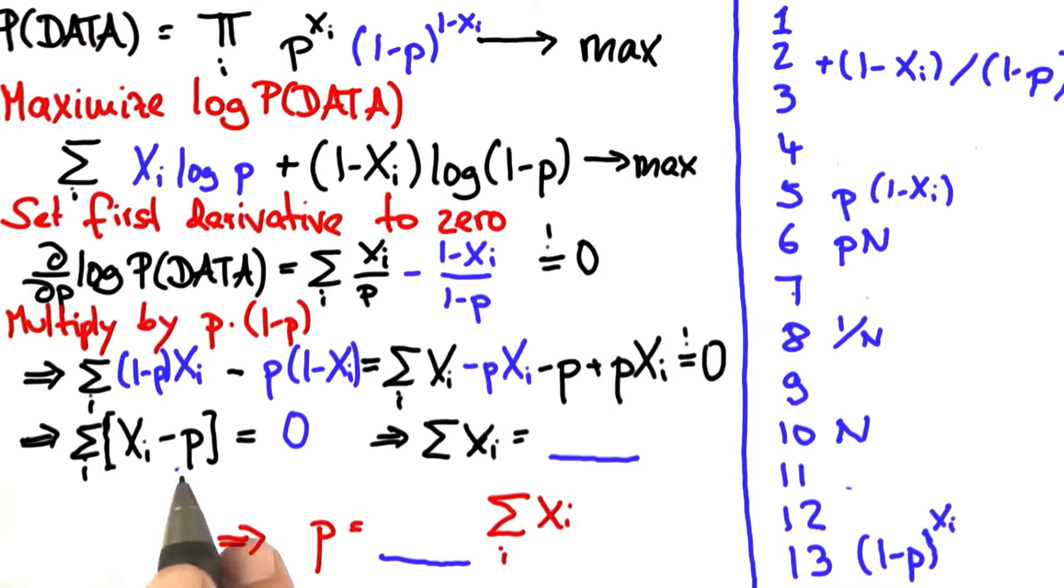When we now take p to the other side, we realize there's n additions of p, number 6. And finally, we bring n back to the left side to use number 8, 1 over n. And we are now done.